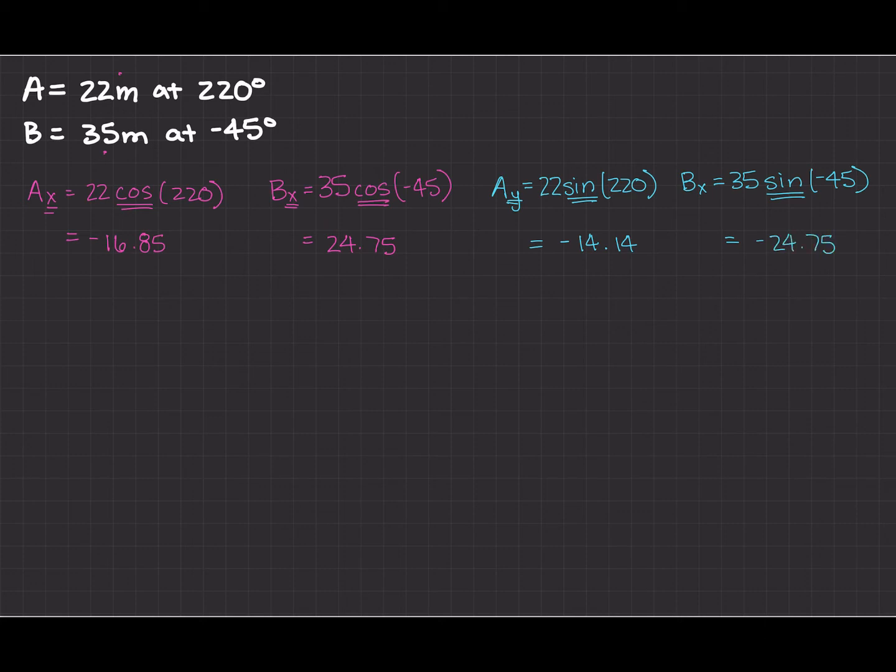Okay so the next thing I want to do is I want to solve for the resultant. So I need to add up the x component so I'll have negative 16.85 plus 24.75 and that's going to give me 7.9. And then I'll do the same thing. I'll do Ry equals negative 14.14 plus negative 24.75 and that's going to give me negative 38.89.